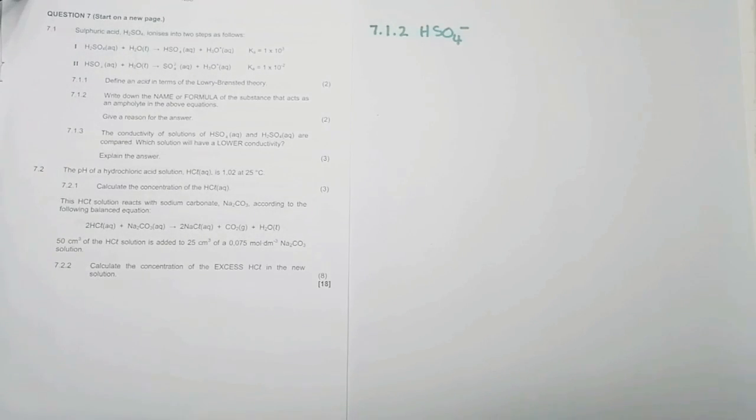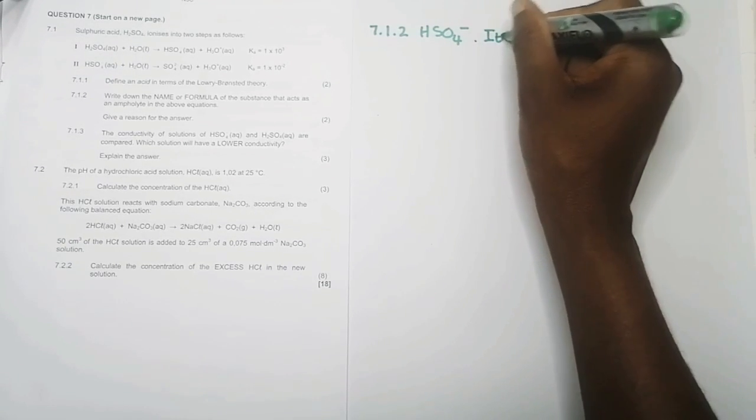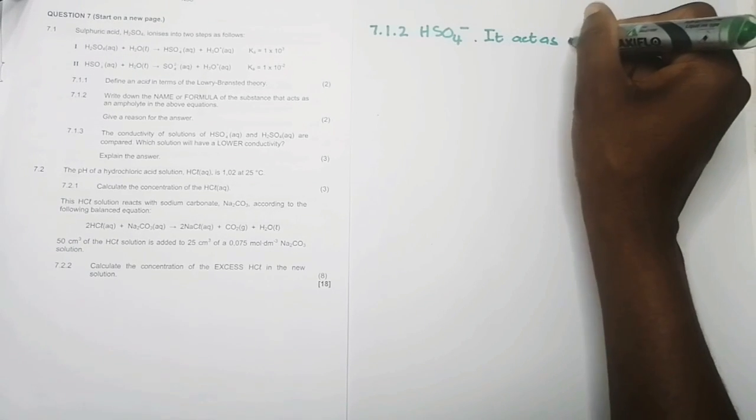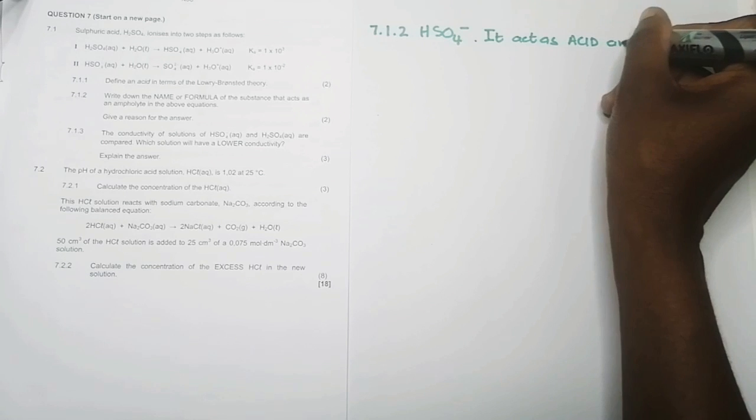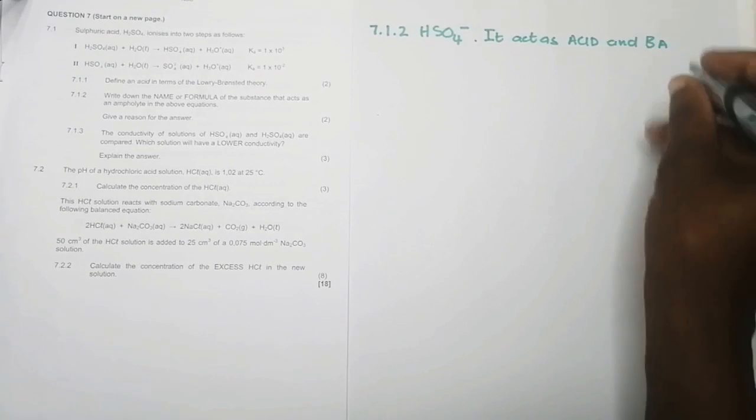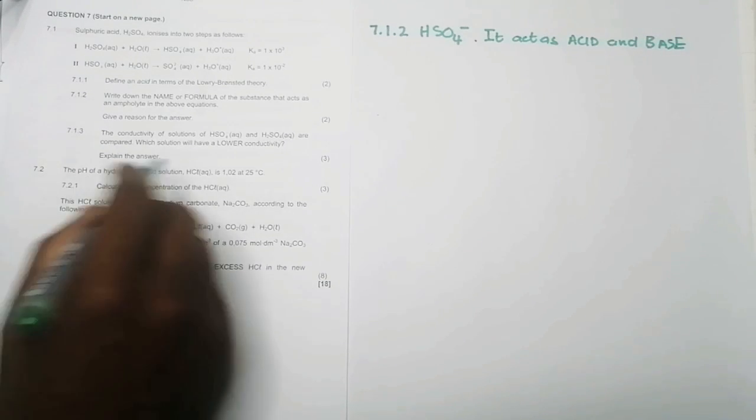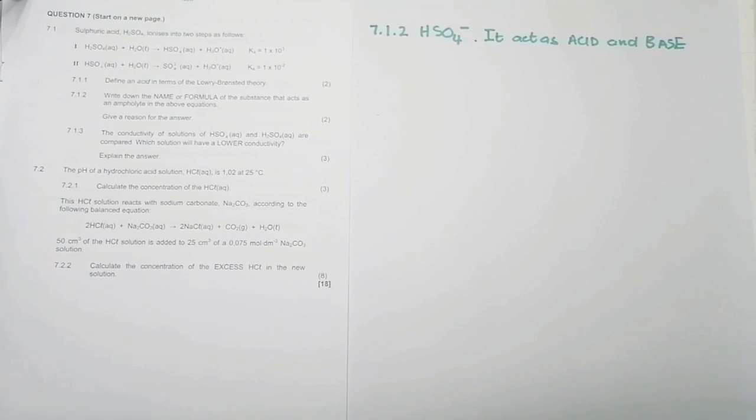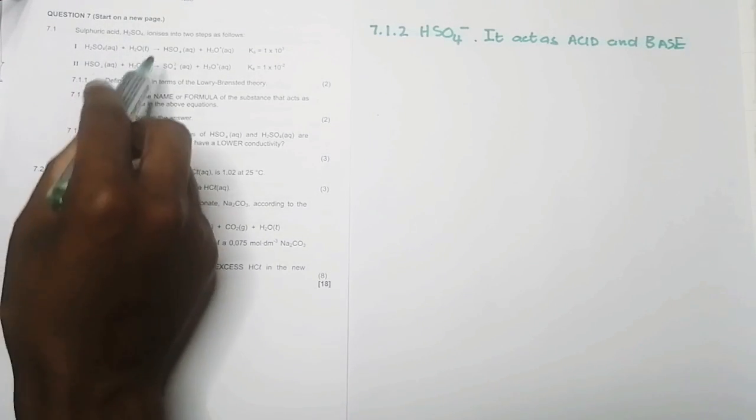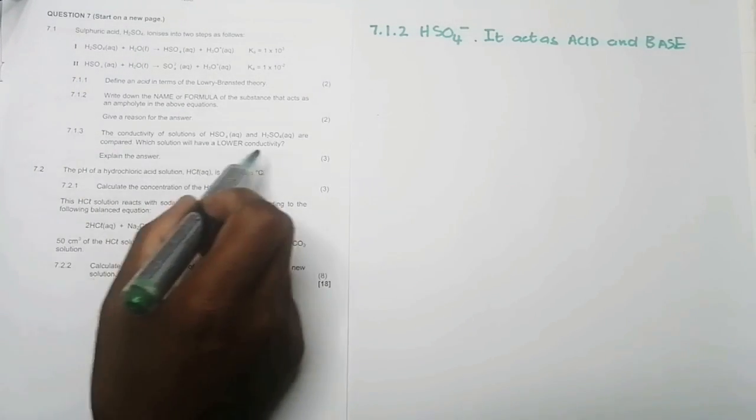So in this case, the correct answer to that would be HSO4. They say write down the name of the formula. I would stick to the formula. So I'd say for 7.1.2 that would be HSO4 minus. And just keep in mind that if you wanted to go with water, that wouldn't be actually a fact. Yes, water is an ampholyte, but in this particular reaction or in the above equations, it does not act as an ampholyte. They said give a reason. So you can say that it acts as an acid and a base.